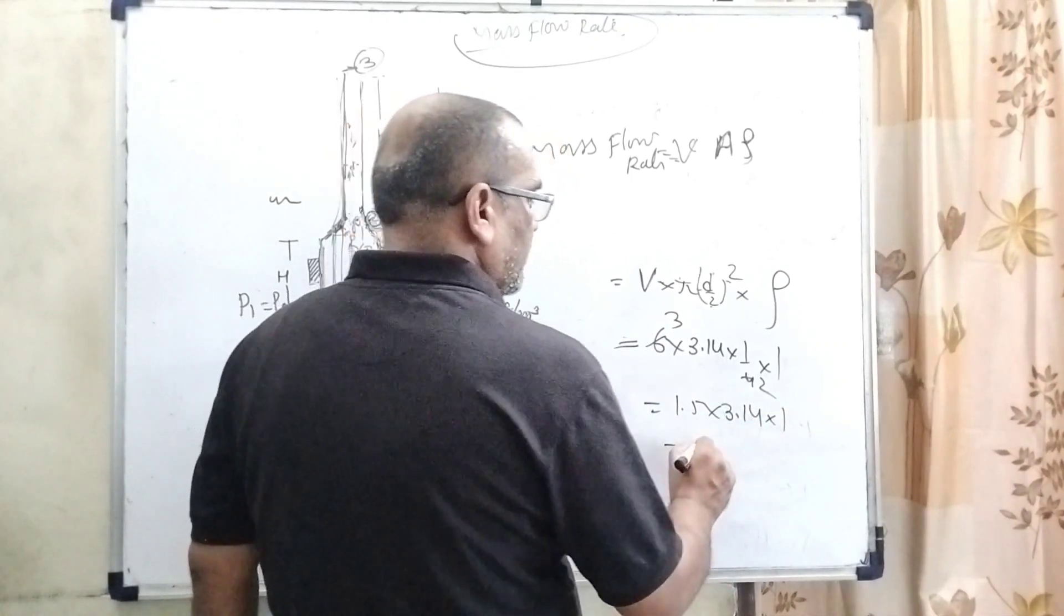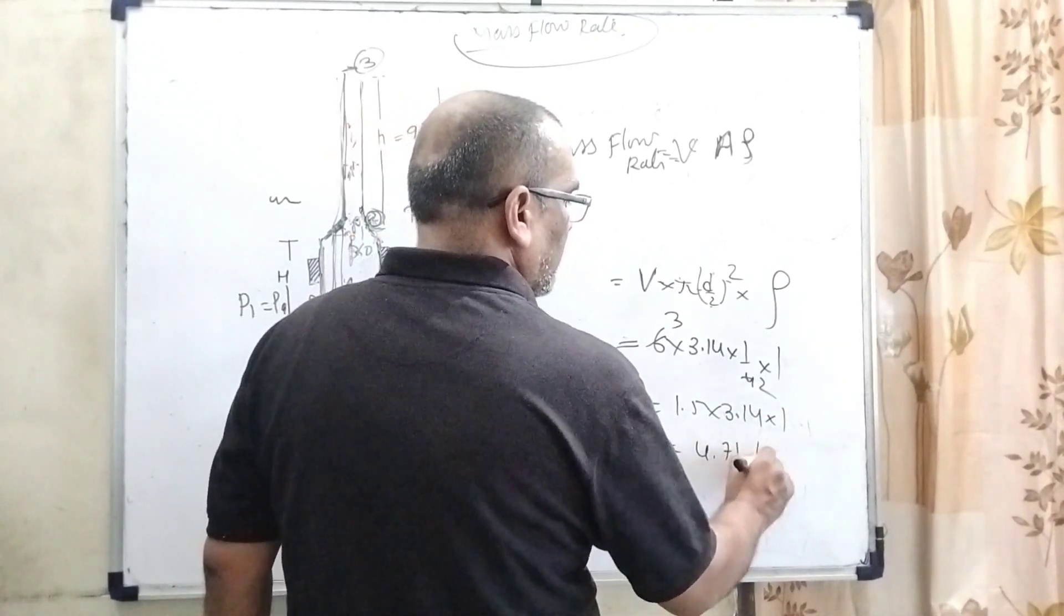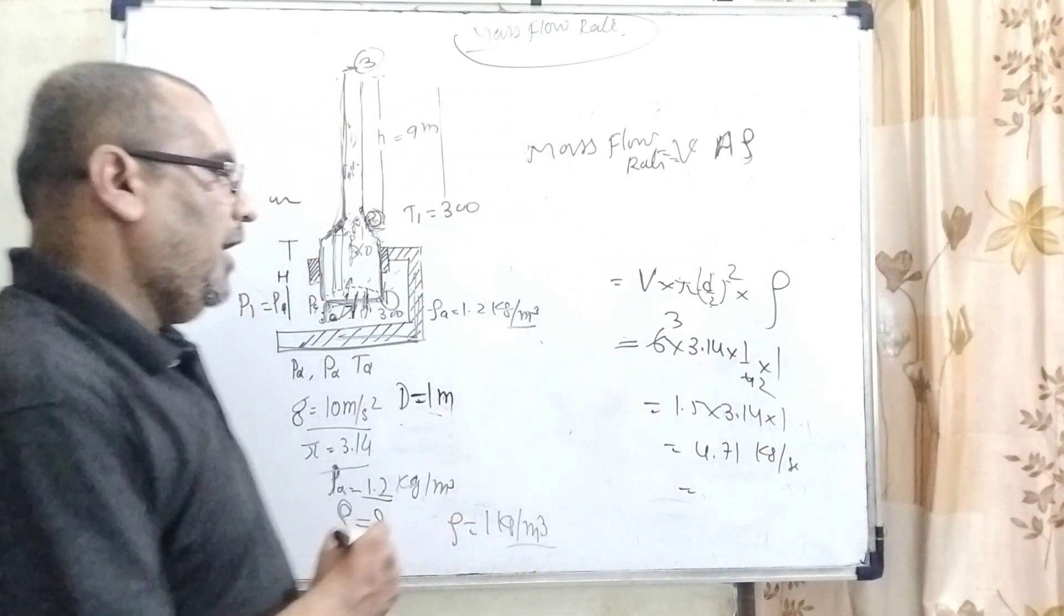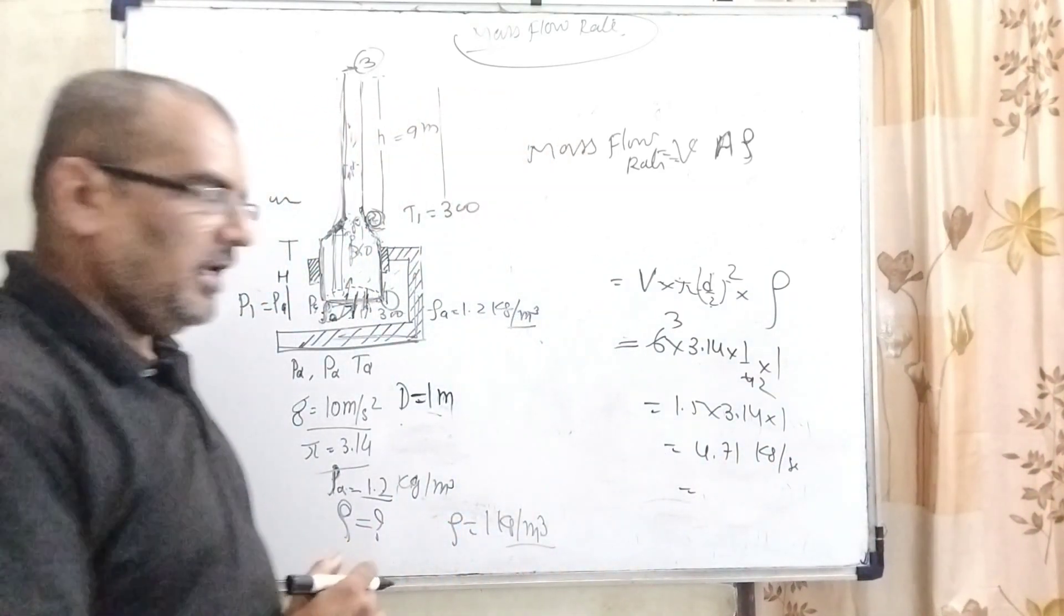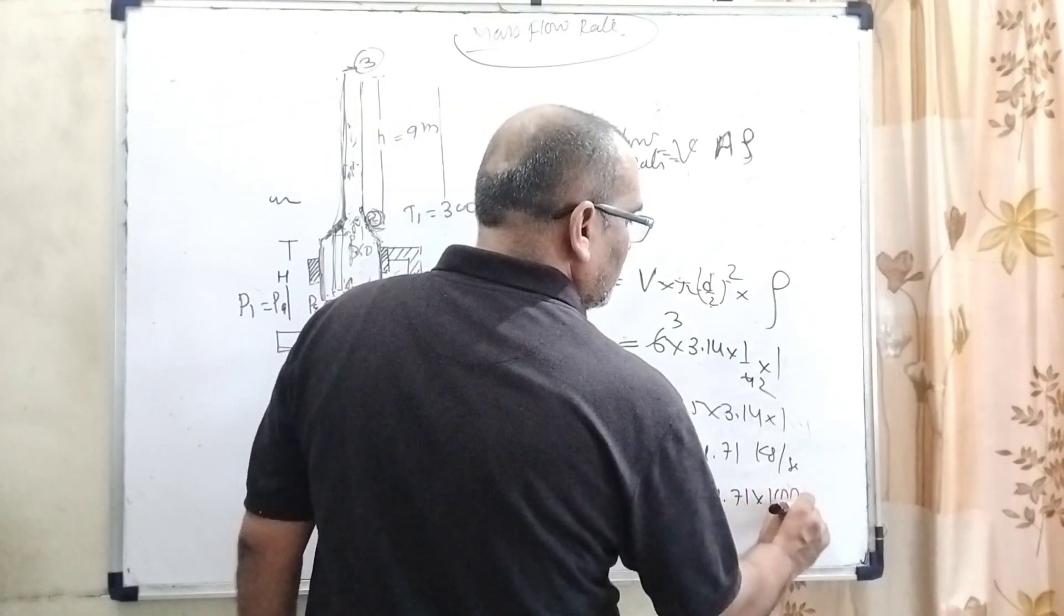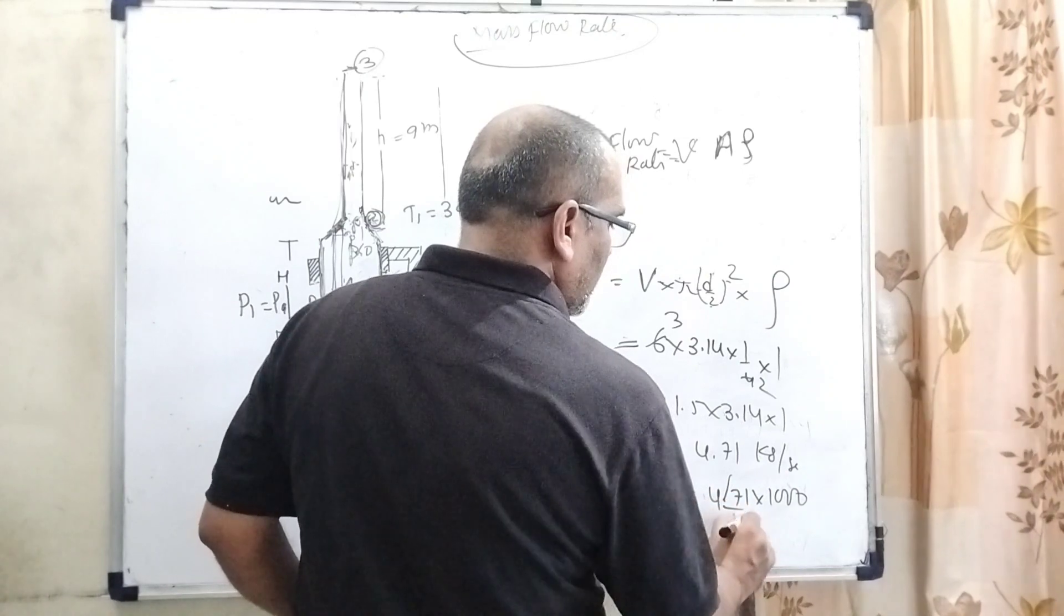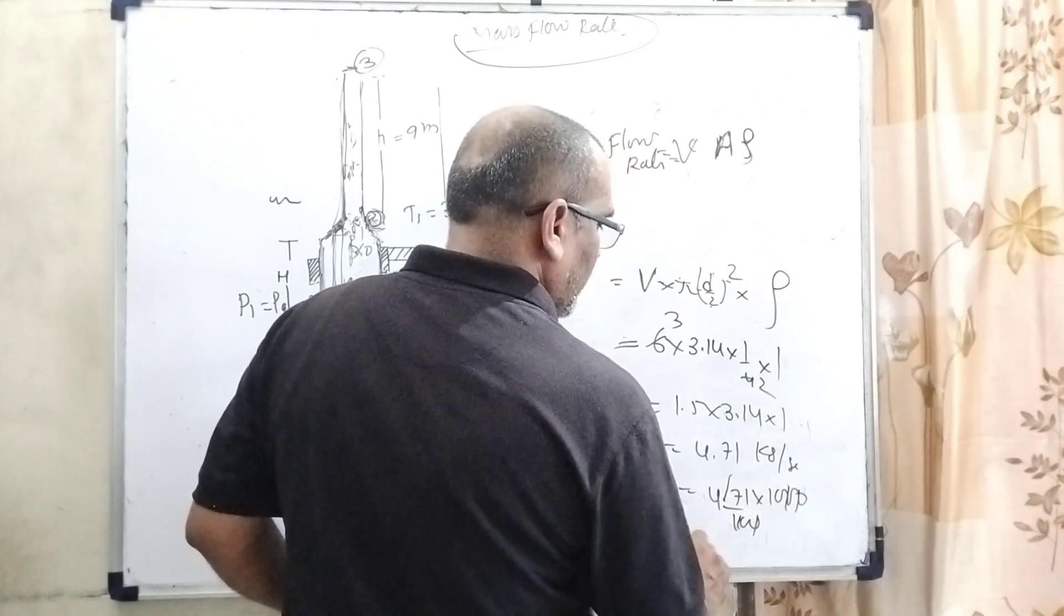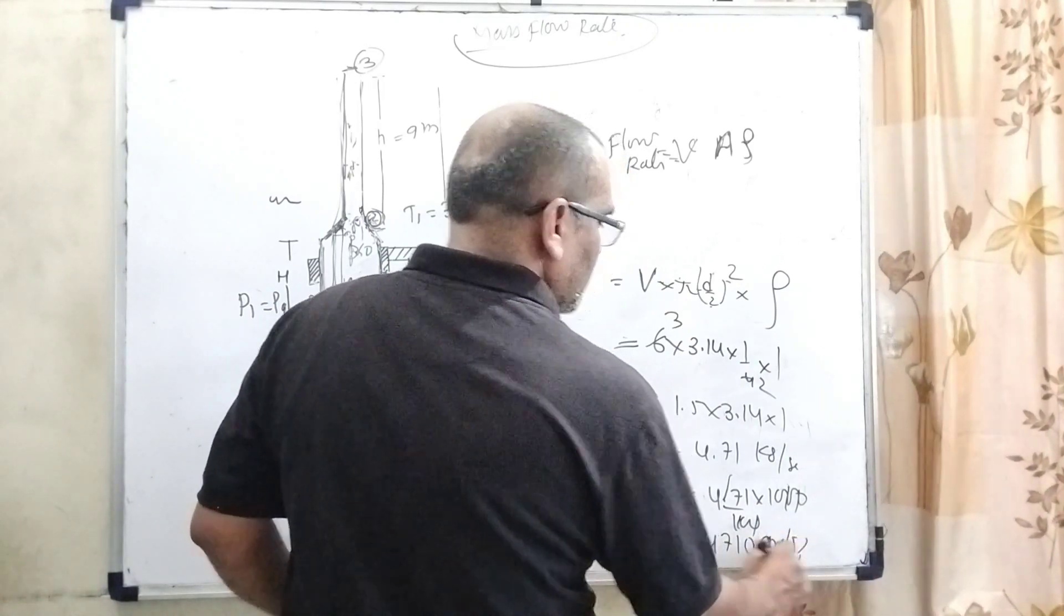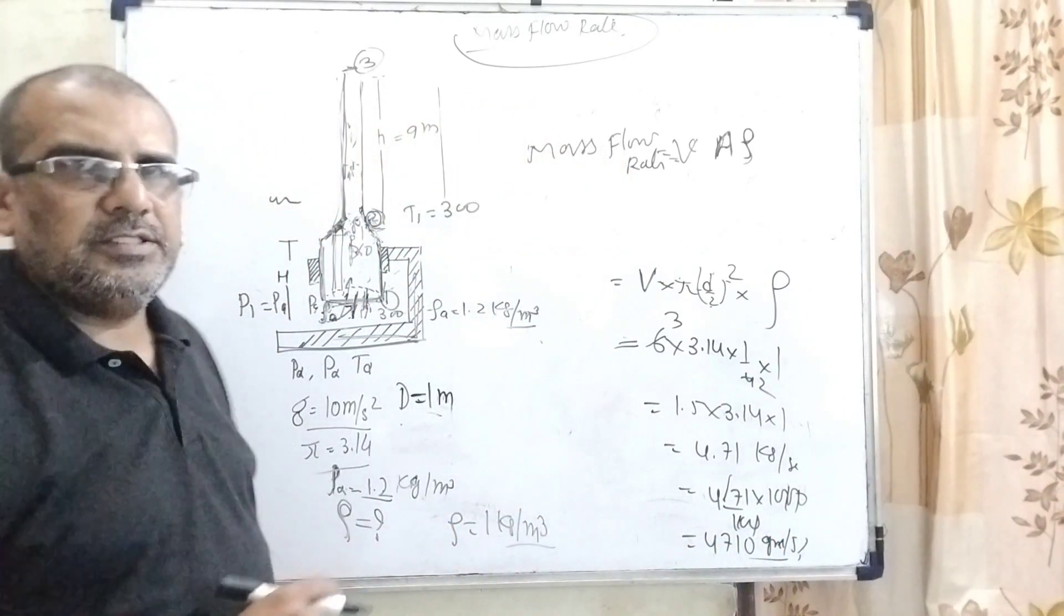Now solving this: 2 times 4 is 2 times 6, then 3 by 2 means 1.5 times 3.14 times 1, we get 4.71 kilogram per second. But we have to answer in grams per second, so multiply by 1000. The correct answer is 4710 grams per second. So this is the answer.